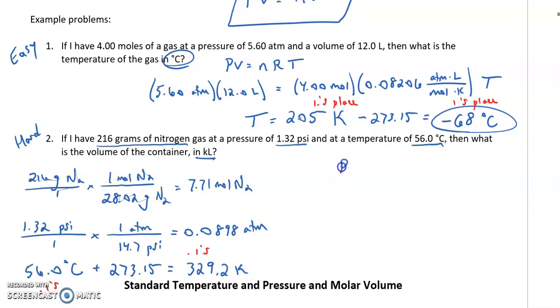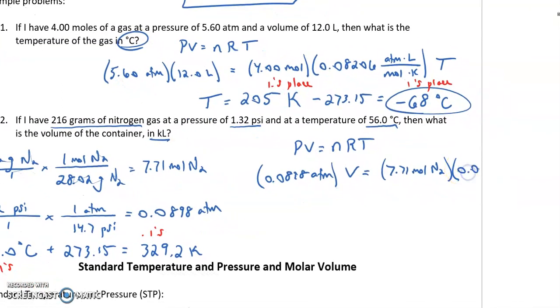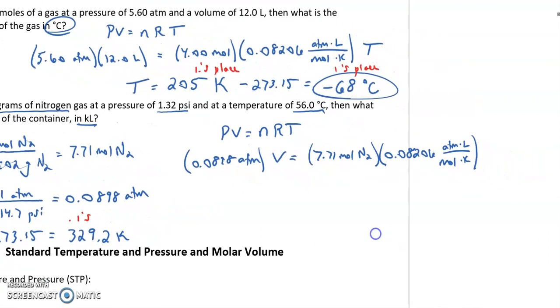Once I have these values converted, now I can plug them into my equation PV equals nRT. My pressure, 0.0898 atmospheres, times my volume, which is my unknown, equals my moles, 7.71 moles of N2, times my R value, 0.08206 atmospheres times liters divided by moles times Kelvin. And then finally my temperature, 329.2 K.